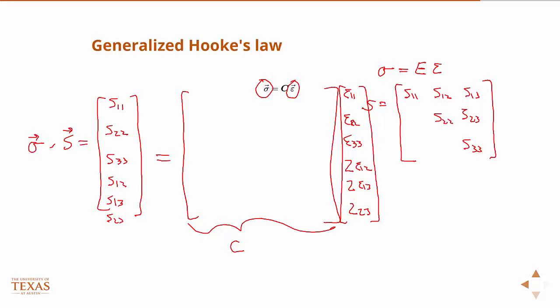So just like if in one dimension, this is my constitutive model, I need one parameter to characterize it. If I have fully anisotropic material, at least according to this equation, knowing nothing else, that means I have 36 material properties, 36 things that populate that C matrix.